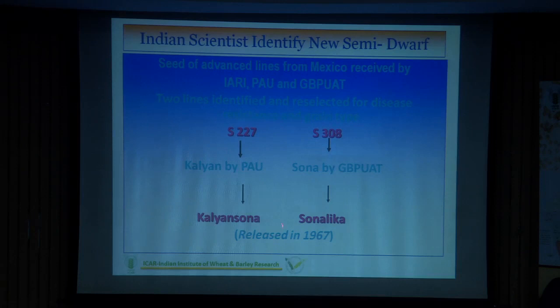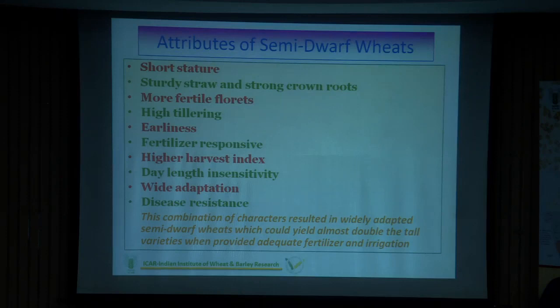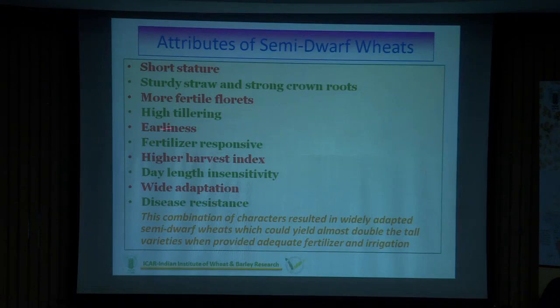Kalyan Sona and Sonalika are the landmark or mega varieties. The earlier ones imported from Mexico had red grains — consumers never preferred red chapatis. So Kalyan Sona and Sonalika were improvements on those red wheats. The dwarf wheats had a short stature so they wouldn't lodge, had sturdy straw, more fertile florets, high tillering, and more importantly they were input-responsive — the more fertilizer you give, the higher the yield. They were also resistant to diseases.